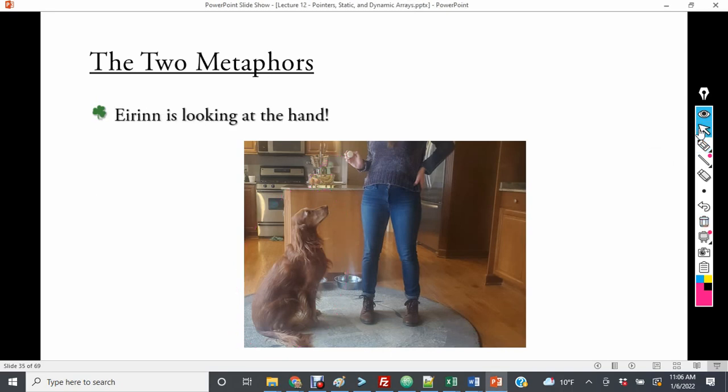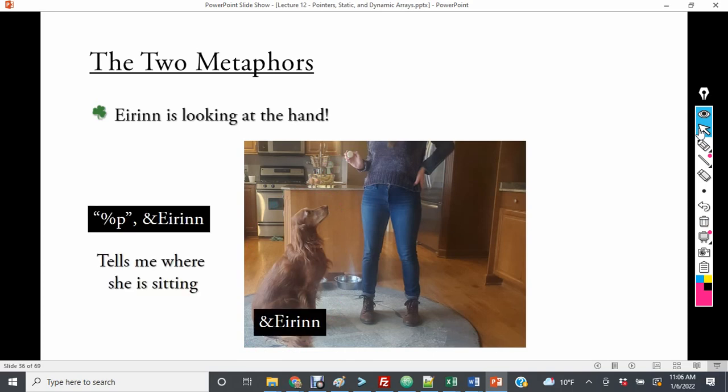So what do we mean here? Well, Eirinn is looking at the hand. So what we need to bear in mind is that the address of Eirinn is where she is sitting. She's a good dog. She's sitting, very well behaved, waiting for her treat.